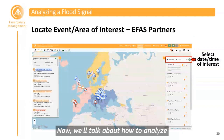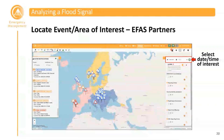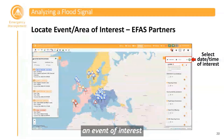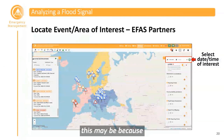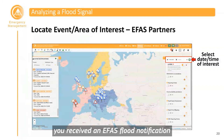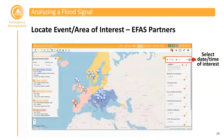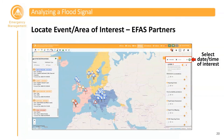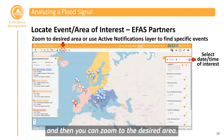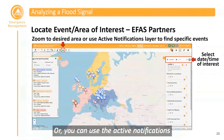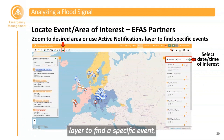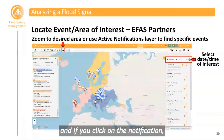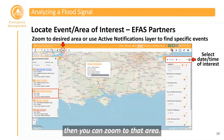Now we'll talk about how to analyze a flood signal in EFAS. The first step is to find an event or area of interest. If you're an EFAS partner, this may be because you received an EFAS flood notification or a flash flood notification. You can log into the EFAS IS map viewer, select the date and time of interest, zoom to the desired area, or use the active notifications layer to find a specific event and zoom to that area.